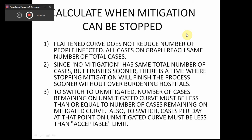The rules are that flattening the curve does not reduce the number of people infected — it spreads it out over time, but all cases on the graph will reach the same total number of cases. Since no mitigation has the same total case count but finishes sooner, there is a time when stopping mitigation will finish the process sooner without overburdening hospitals. To switch to unmitigated, the number of cases remaining on the unmitigated curve must be less than or equal to the number of cases remaining on the mitigated curve.